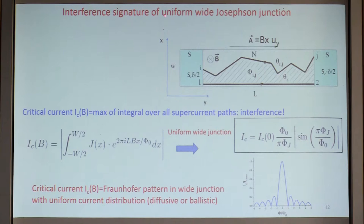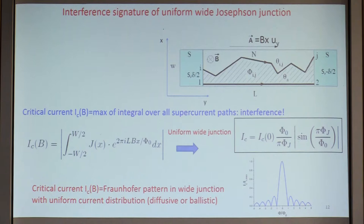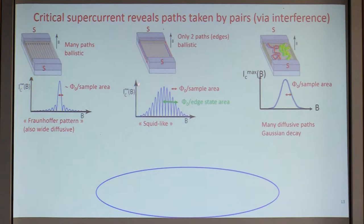For instance, if you have a wide Josephson junction with a uniform current distribution, you get a cardinal sine function — the Fraunhofer pattern. Note this doesn't depend on whether it's diffusive or ballistic transport. This was put to use in an experiment on mercury telluride quantum wells by Amir Yacobi's group: if you have a uniform supercurrent distribution, the critical current as a function of B gives a sinc function; if you only have two paths, it's a SQUID — the Fourier transform of two delta functions gives a sinusoidal interference pattern. Whether the current is uniform or focused on two edges gives very different interference patterns, and if it's diffusive you have a Gaussian decay with no real interference bouncing.